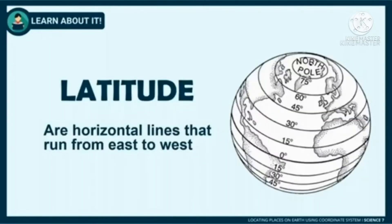Those lines which run horizontally from east to west are called latitudes. Latitudes are parallel to each other. Hence, latitudes do not meet or intersect.